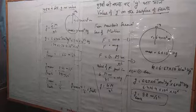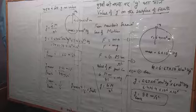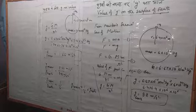We can use this formula for any planet, satellite, or object to calculate its g value. Today we saw the value of g and the comparison between Earth and Moon. Friends, if you have any confusion, you can contact me or comment. I will answer your questions. Thank you for watching.